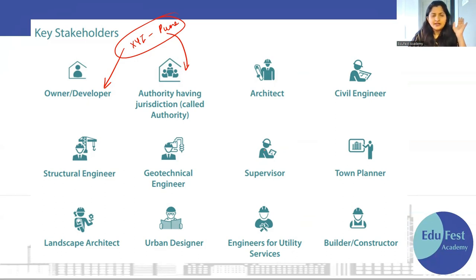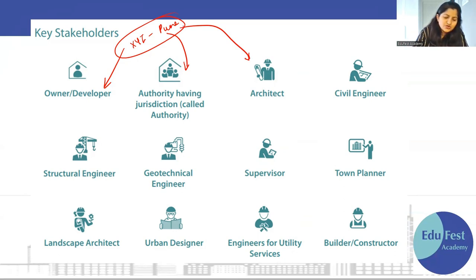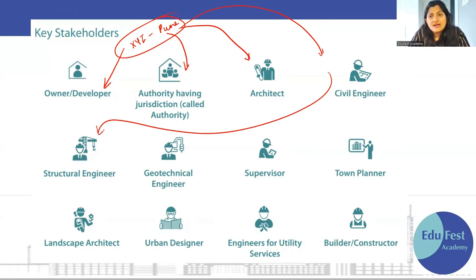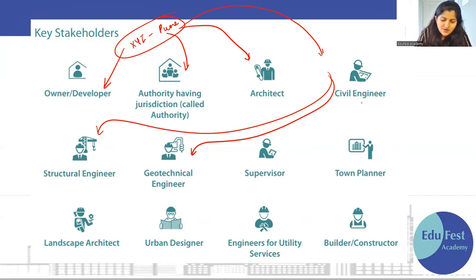Then I will finalize the architect — jo bhi ek proper architectural loop dega. Uske saath saath mujhe ek civil engineer lagega, kyunki mujhe woh sab kuch execution mein lena hai. Woh civil engineer ek structural engineer appoint karega. Yeh sab hone se pehle, wahan ki soil ki testing hogi, wahan ka sab kuch detailing aayega, SBC nikalega. So I need a geotechnical engineer for that.